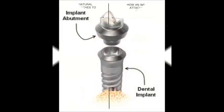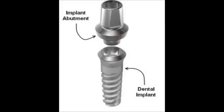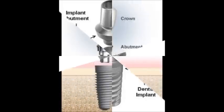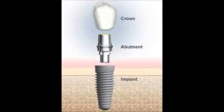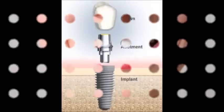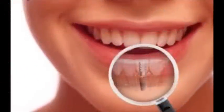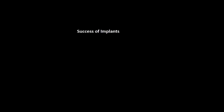The implant fixture is first placed so that it is likely to osseointegrate, then a dental prosthetic is added. A variable amount of healing time is required for osseointegration before either the dental prosthetic — a tooth, bridge, or denture — is attached to the implant, or an abutment is placed which will hold a dental prosthetic.